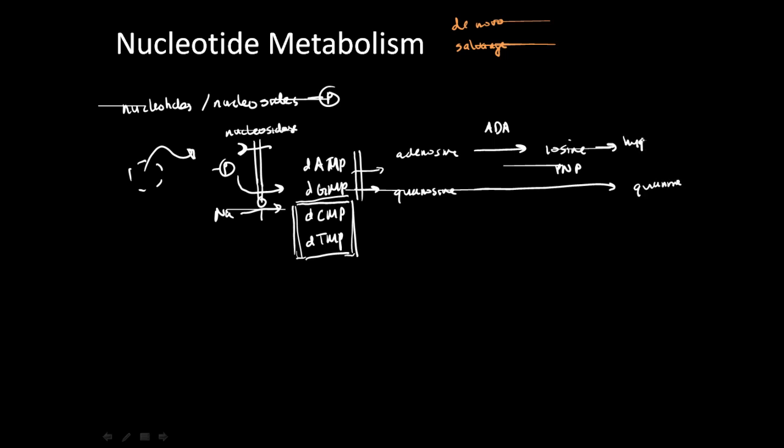At this point there are two main pathways. There can be the salvage pathway in which it goes back into nucleosides, or it can have the catabolism or degradation pathway. For the salvage pathway, this can be synthesized back into IMP, the inosine monophosphate, or GMP through the use of kinases, and there can be further kinase activity to recreate ATP and GTP.